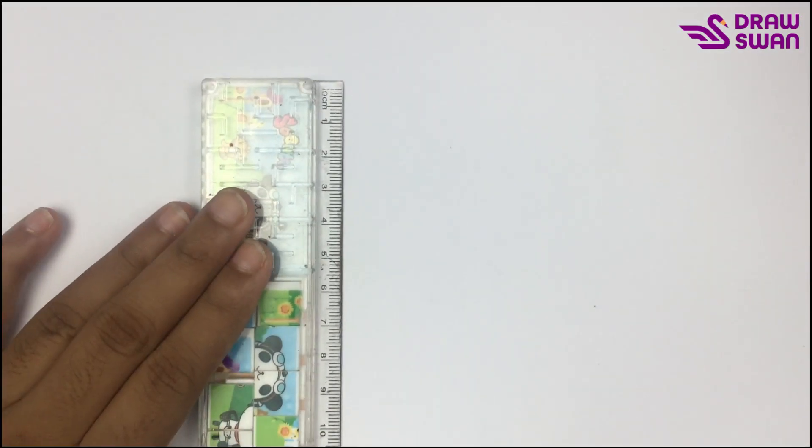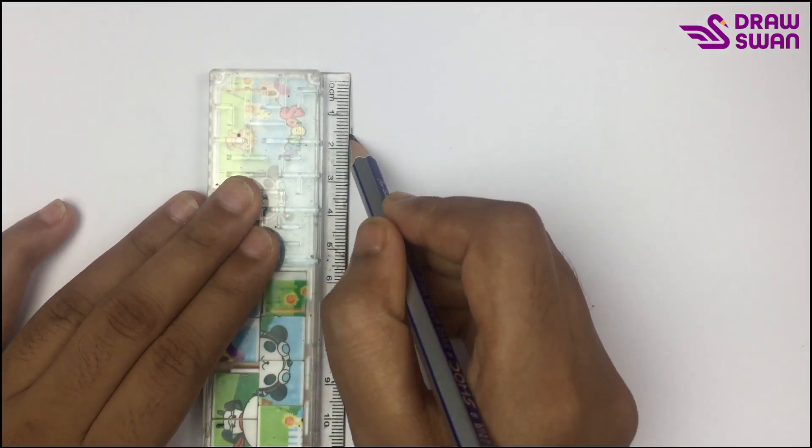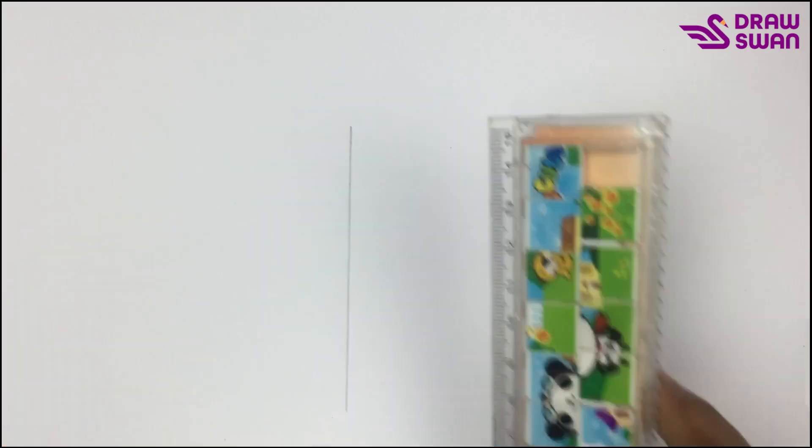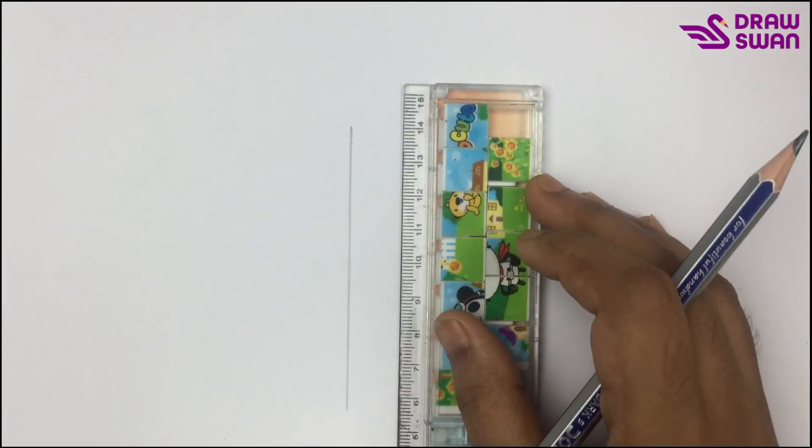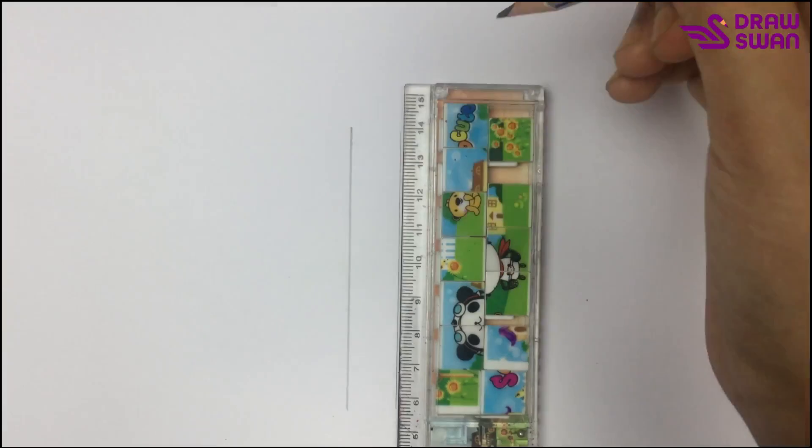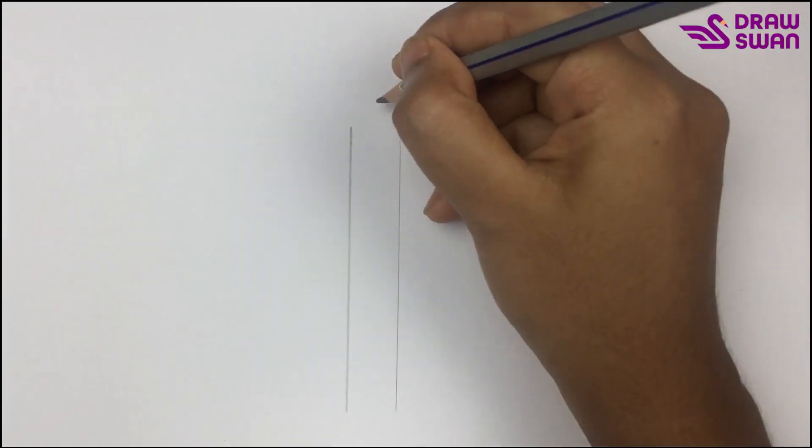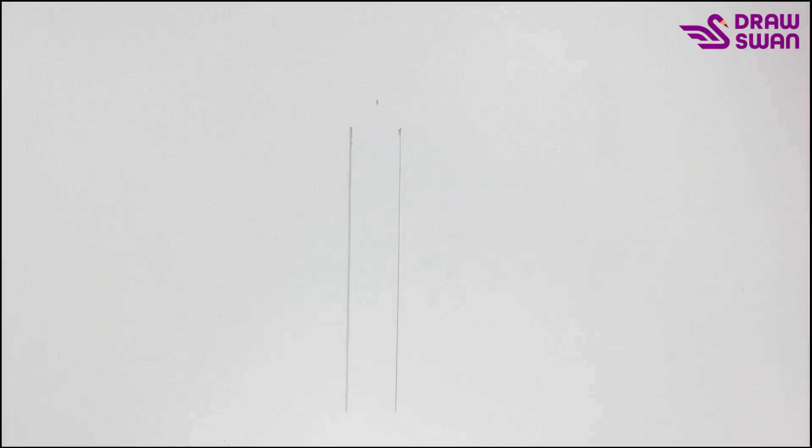Here you can see that I'm using my ruler and my pencil to draw the birthday candle. At the beginning you have to draw two straight lines. I'm marking this area to connect them.